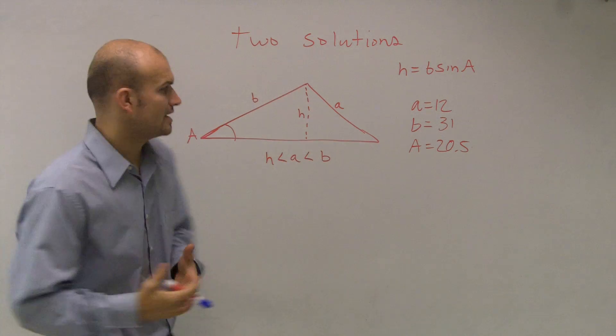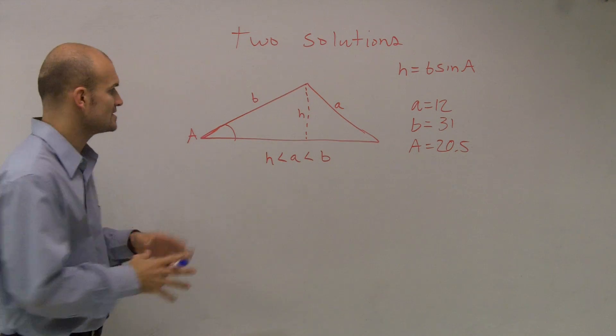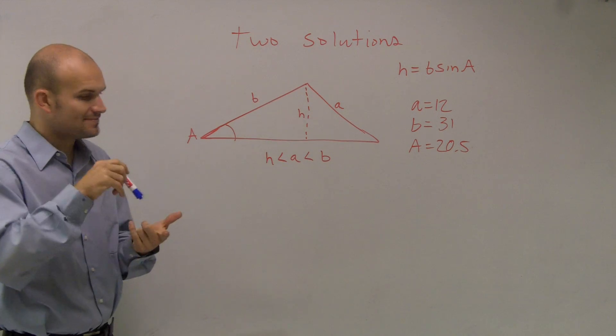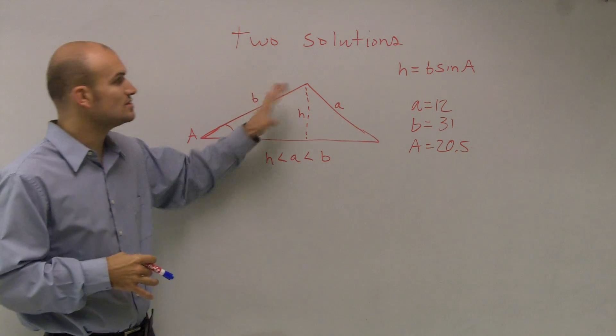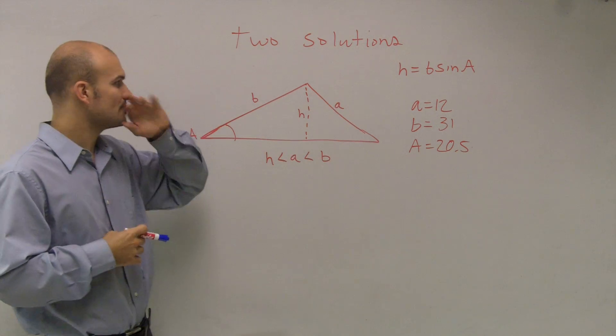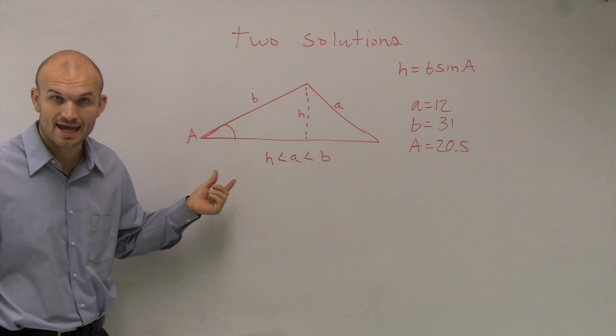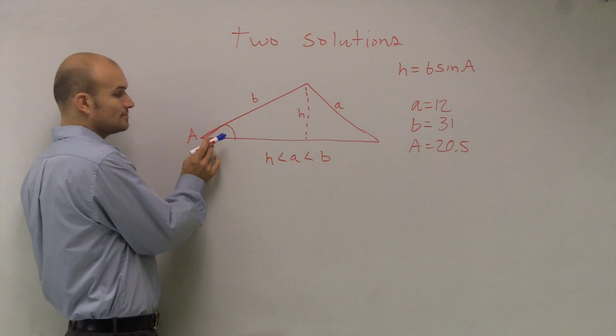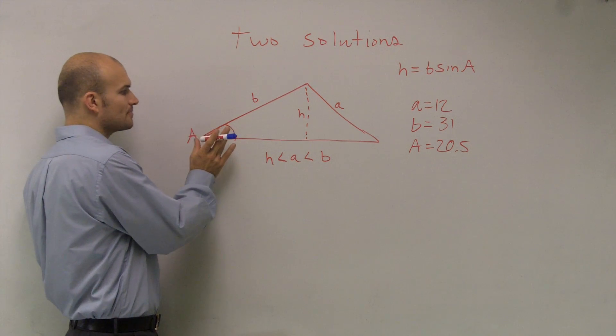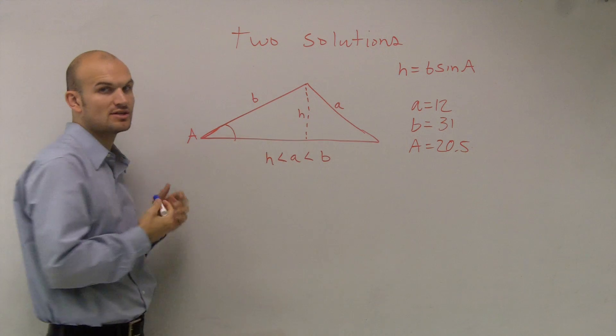The important thing when we're going to have two solutions is we have to be using our Law of Sines to work on this. And one thing about working with Law of Sines is we have to have two sides and an opposing angle. That opposing angle means it's just opposite of one of our sides.